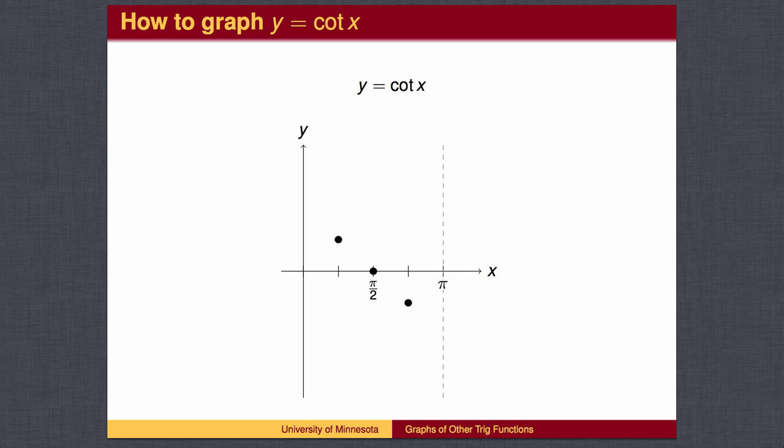The cotangent graph is headed downward toward pi, and repeats every pi, just like the tangent did.